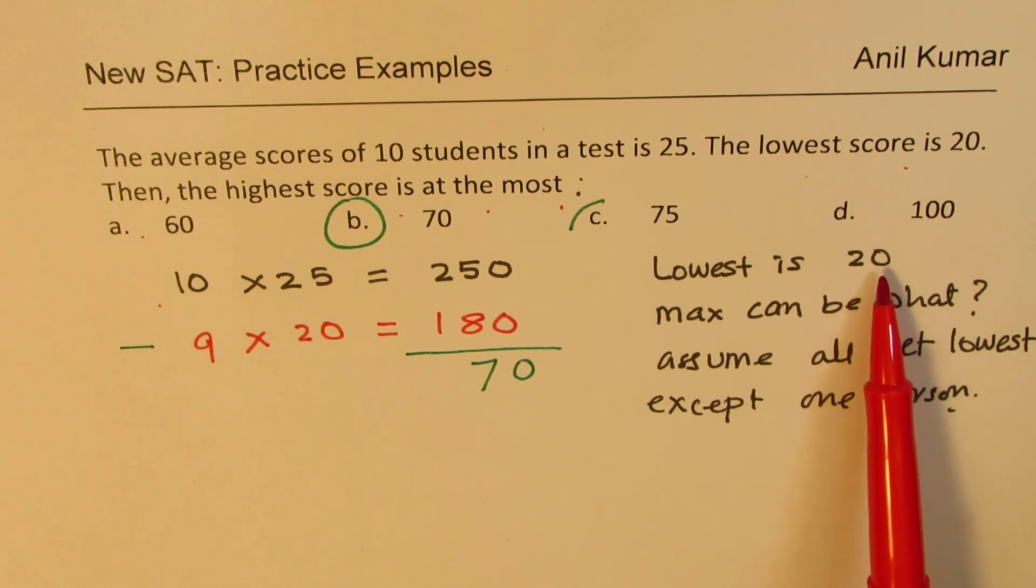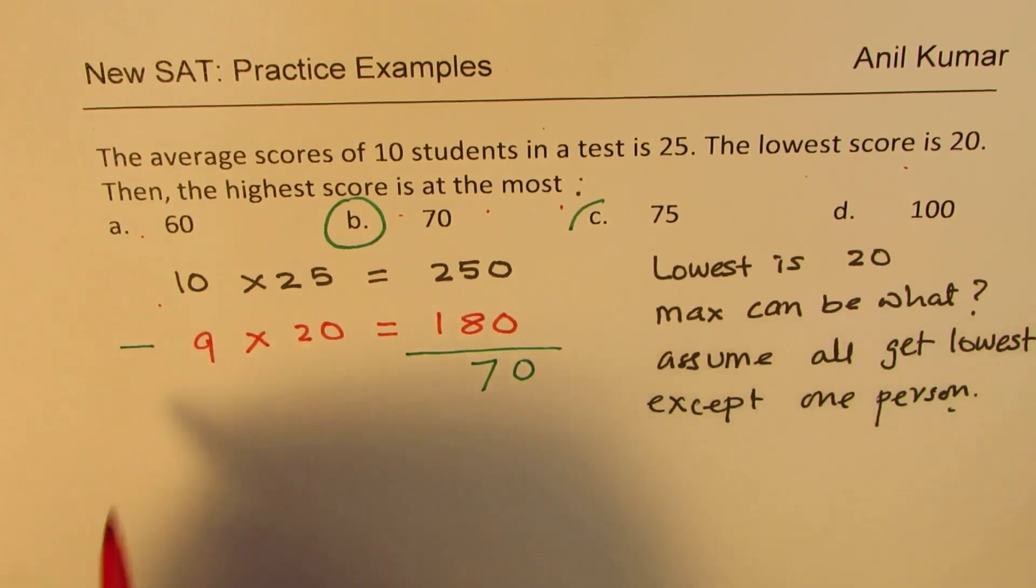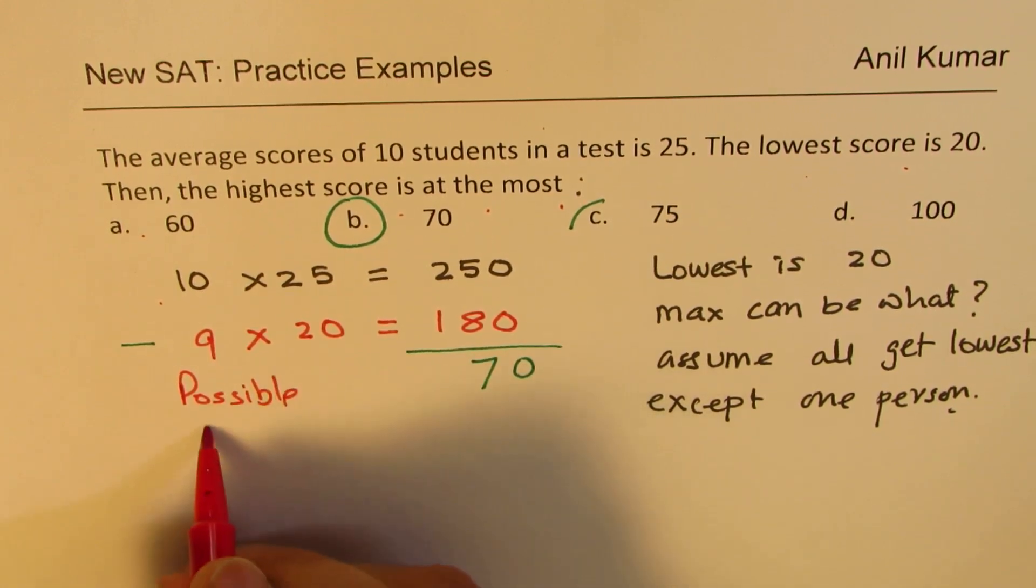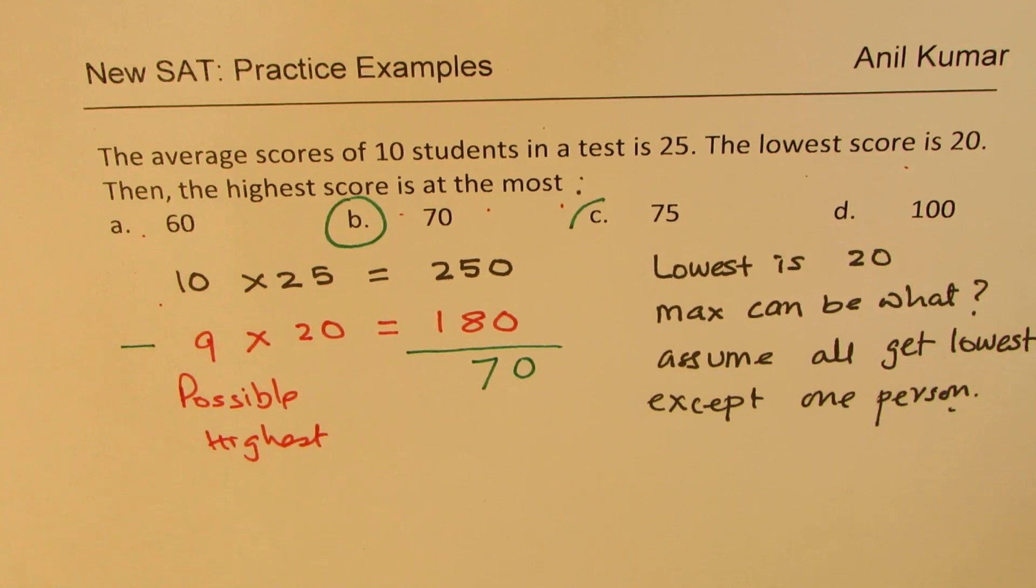We have to assume that all get 20 except one person, and that person gets the highest score. So the possible highest score, this becomes your possible highest score. So I hope that makes sense.